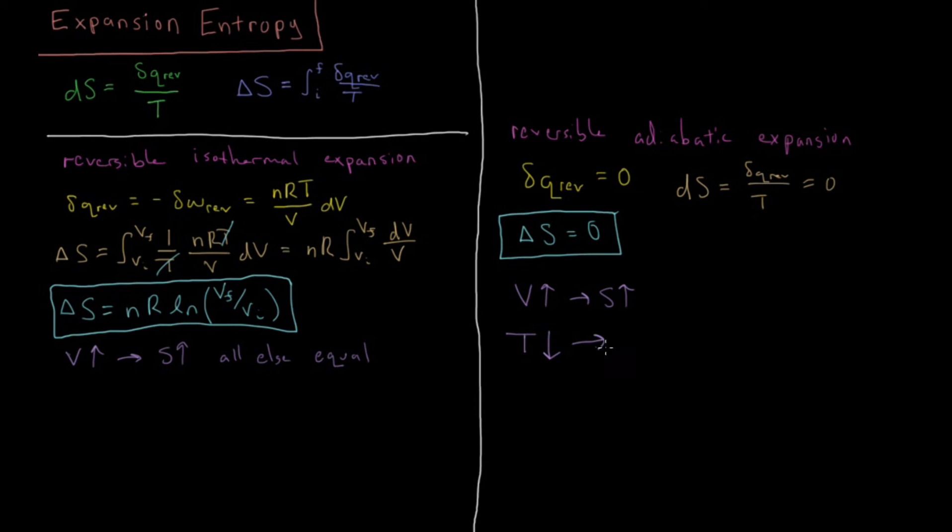We're going to see in the future that temperature and entropy are also proportional to one another. So if the temperature goes down, the entropy goes down. So these two effects end up canceling, and the result is that your net entropy is zero.